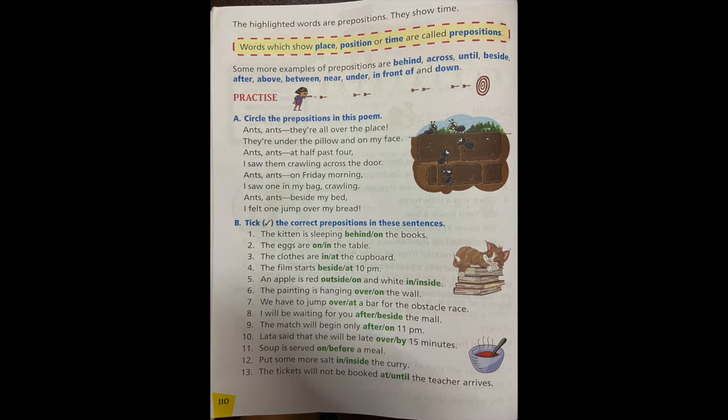We have to jump dash a bar for the obstacle race. Where do you jump when there is a bar placed during a running race? It is over. You don't jump at. Now the remaining 8 to 15, you will do it as a homework. And then the correct answers will be on the screen. You can cross-check.